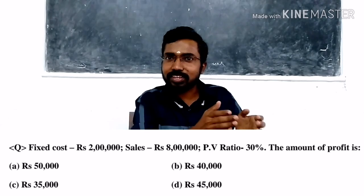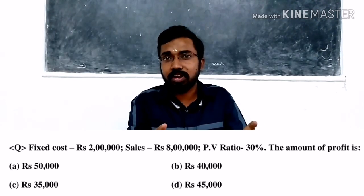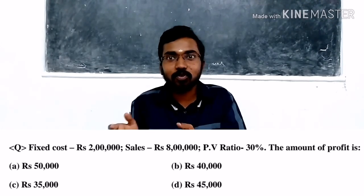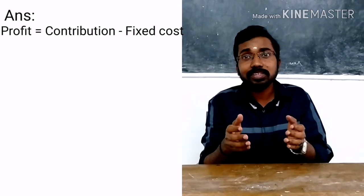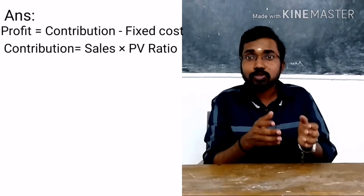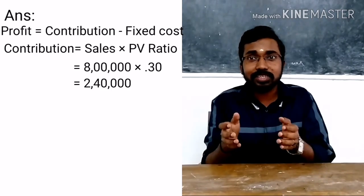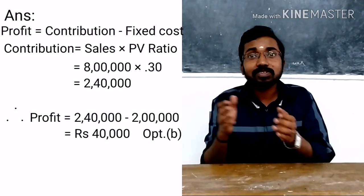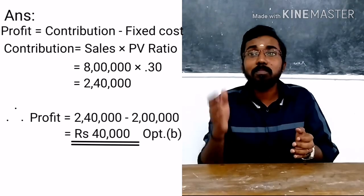Last question: fixed cost 2 lakh, sales 8 lakh, PV ratio 30% — what will be the amount of profit? Options: 50,000; 40,000; 35,000; 45,000. Profit equals contribution minus fixed cost. Contribution equals sales × PV ratio: 8 lakh × 30% = 2,40,000. Profit equals 2,40,000 minus 2,00,000 = 40,000. The answer is option B — 40,000.